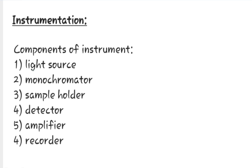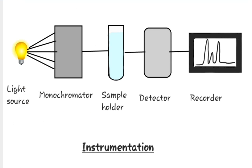Components of the instrument are light source, monochromator, sample holder, detector, amplifier, and recorder. This is the schematic diagram about instrumentation of UV spectroscopy.